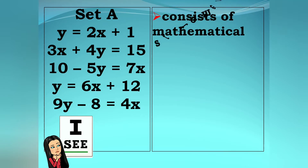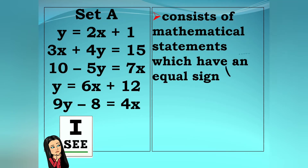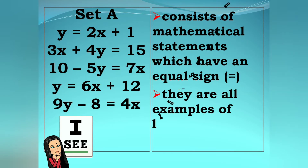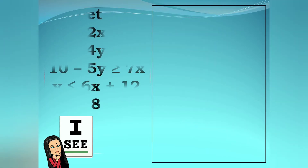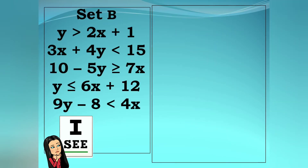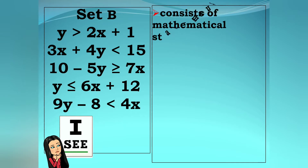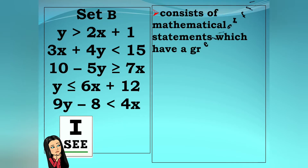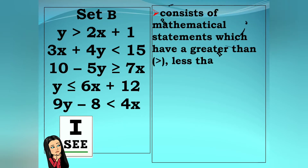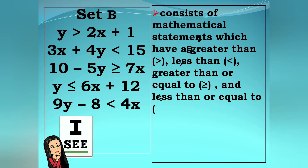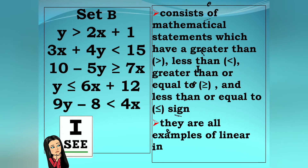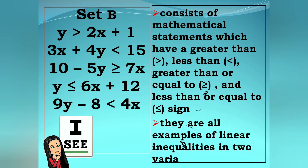Set A consists of mathematical statements which have an equal sign, so they are all examples of linear equations in two variables. While Set B consists of mathematical statements which have greater than, less than, greater than or equal to, and less than or equal to signs, so they are all examples of linear inequalities in two variables.